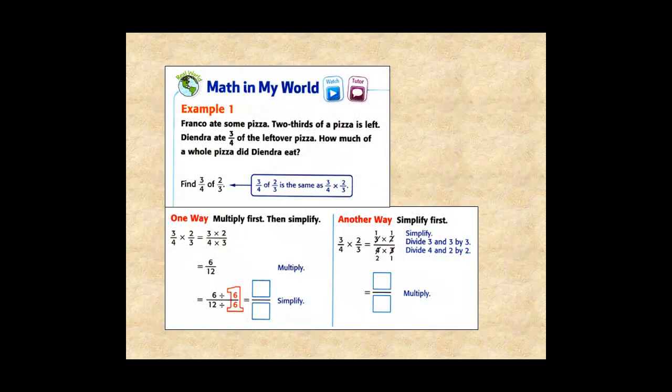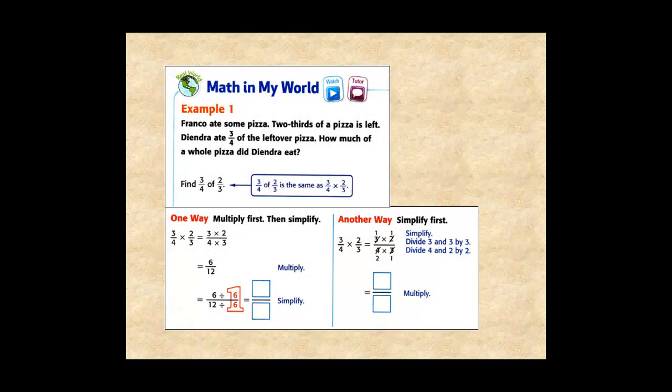The first thing to notice about example 1 is this statement. 3 fourths of 2 thirds is the same as 3 fourths times 2 thirds. Always remember, of means multiply.